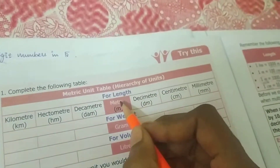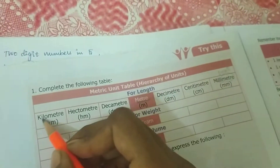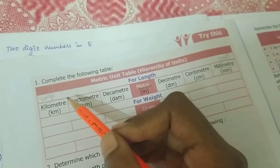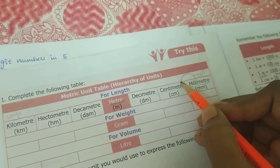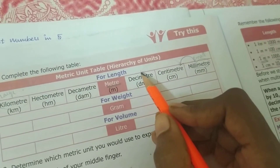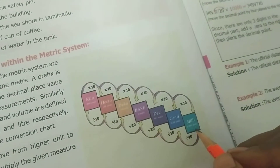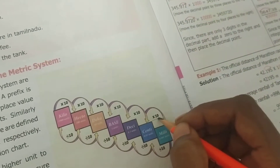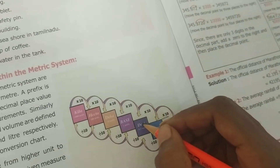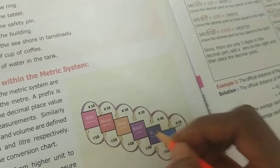Meter is the middle part. Millimeter is very small and kilometer is large, meter is the middle part. After millimeter: millimeter is converted to centimeter, centimeter is converted to decimeter, decimeter is meter. So millimeter 10 times increased becomes centimeter, centimeter 10 times increased becomes decimeter, decimeter 10 times becomes meter.